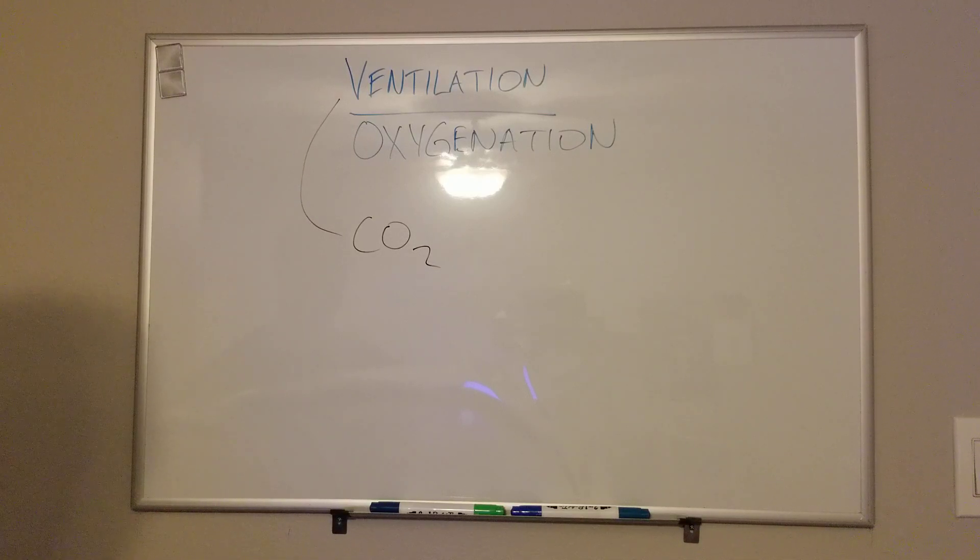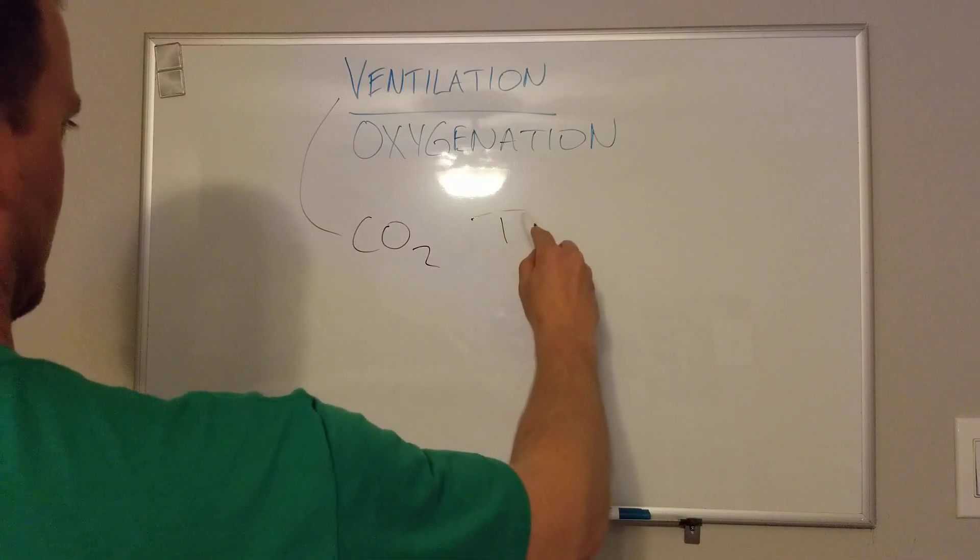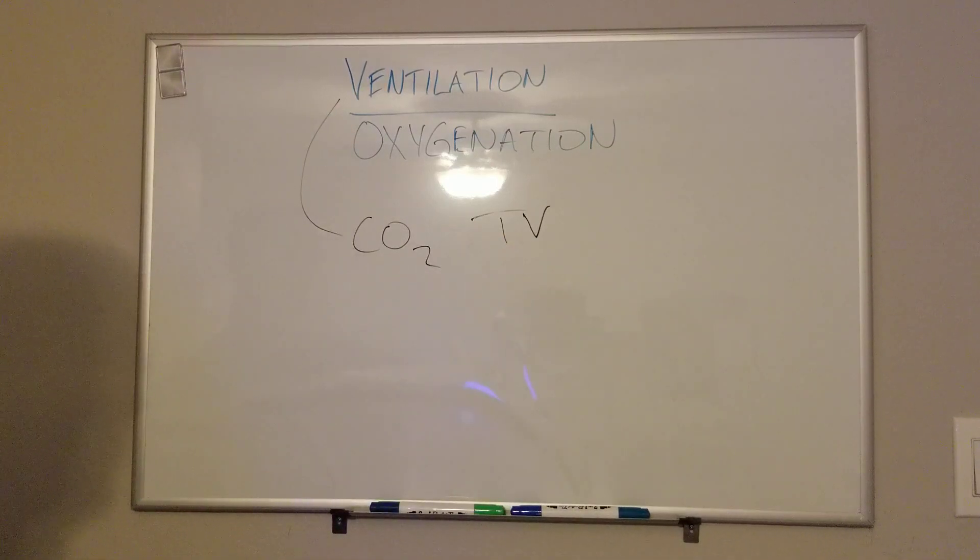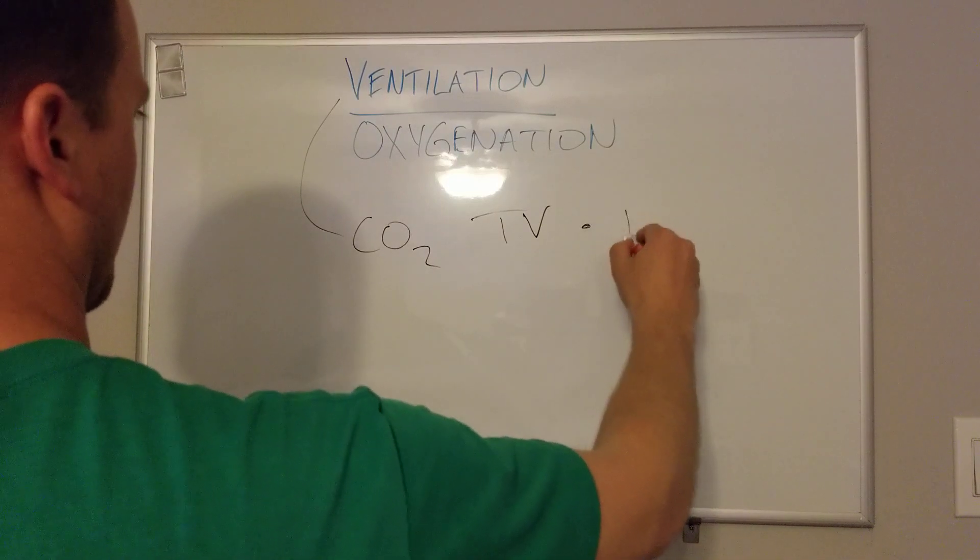The two factors that you'd set on your assist control, volume control type vent situation for this would be tidal volume or how much you're breathing with each breath, the volume, right? So if someone had too much CO2, they're hypercarbic or whatever, they're not blowing off their CO2. It's because they're not ventilating. Their minute ventilation isn't high enough. So you want to increase their tidal volume or increase their respiratory rate.